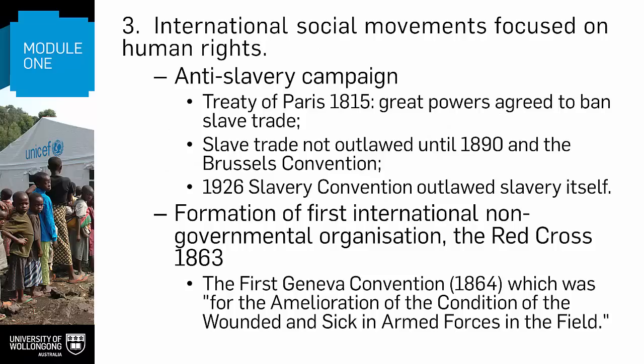A third impetus towards international cooperation and organisation was the development of international social movements. There are a whole range of movements that could be highlighted here. I've chosen two that fall within the liberal tradition, namely the anti-slavery movement and the Red Cross. The anti-slavery movement organised meetings, wrote pamphlets, took out ads in newspapers, and pressured their political leaders. So, with Great Britain in the lead, the Great Powers, through the Treaty of Paris in 1815, actually agreed to stop the slave trade. Trading in slaves wasn't outlawed until 1890 with the Brussels Convention, and only in 1926 with the Slavery Convention was slavery itself outlawed.